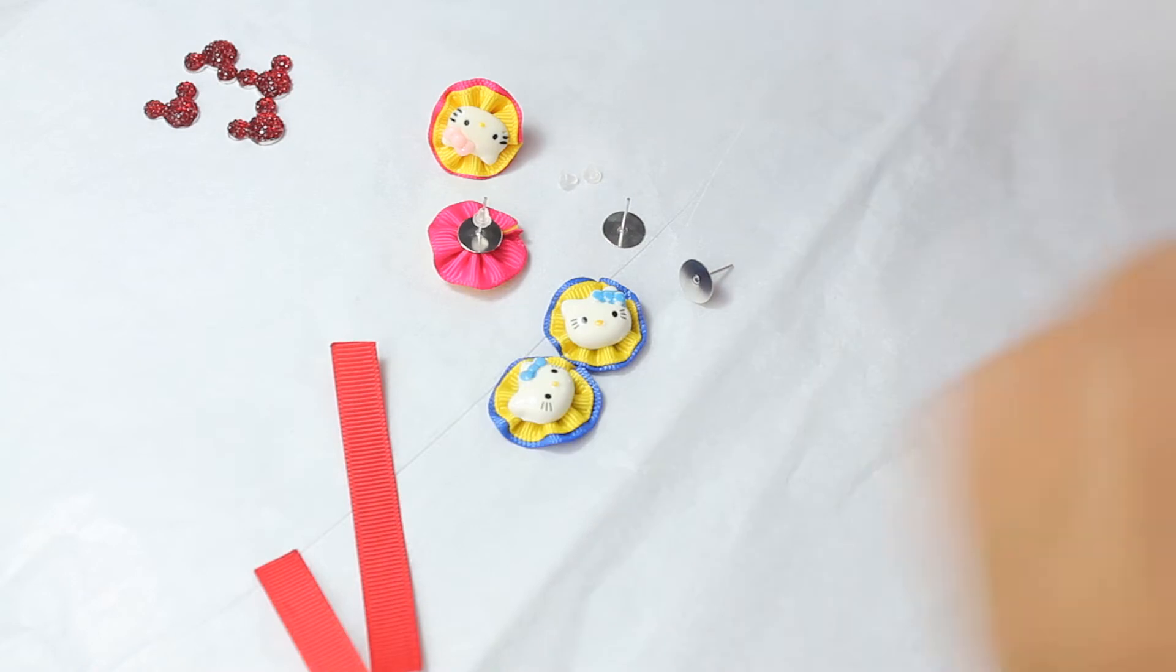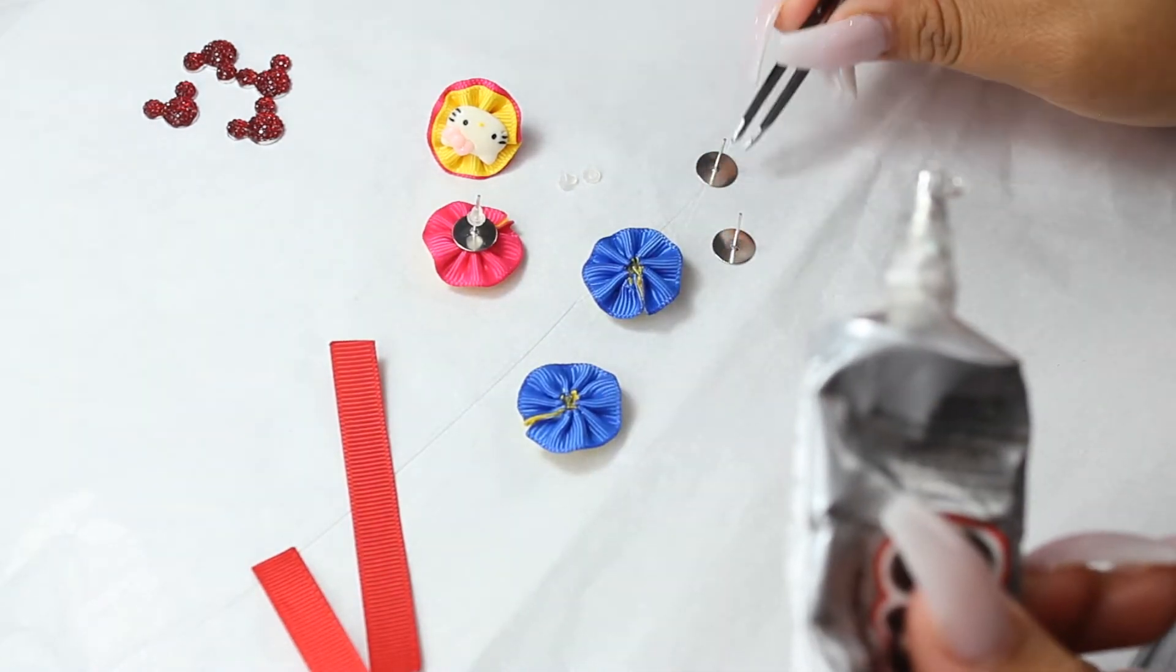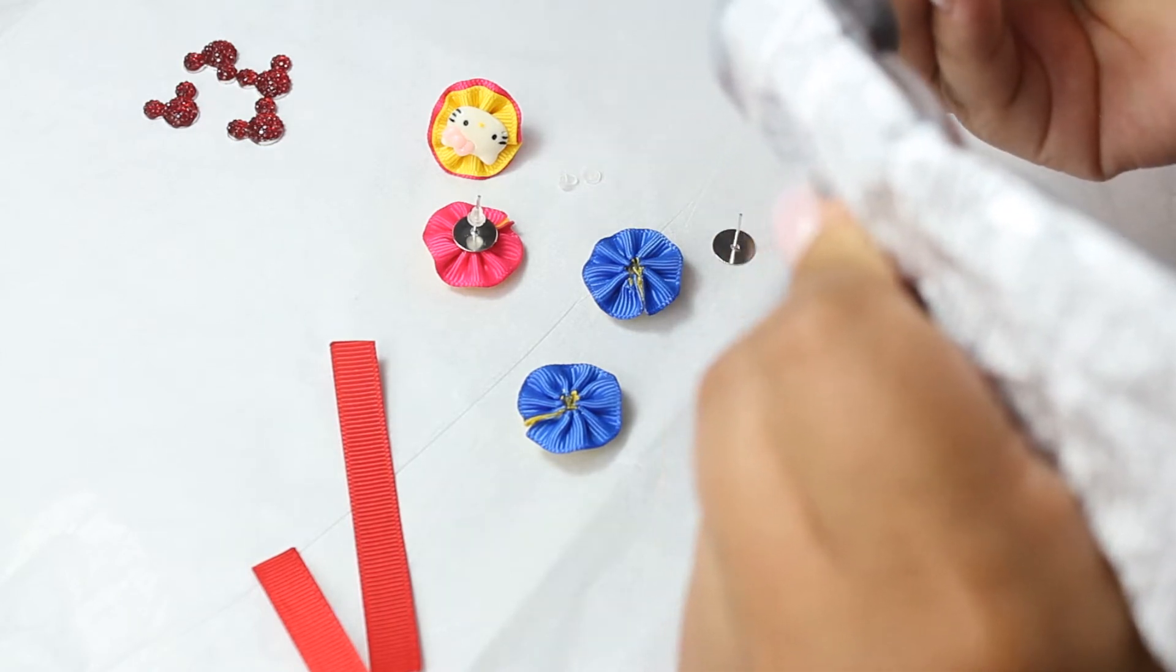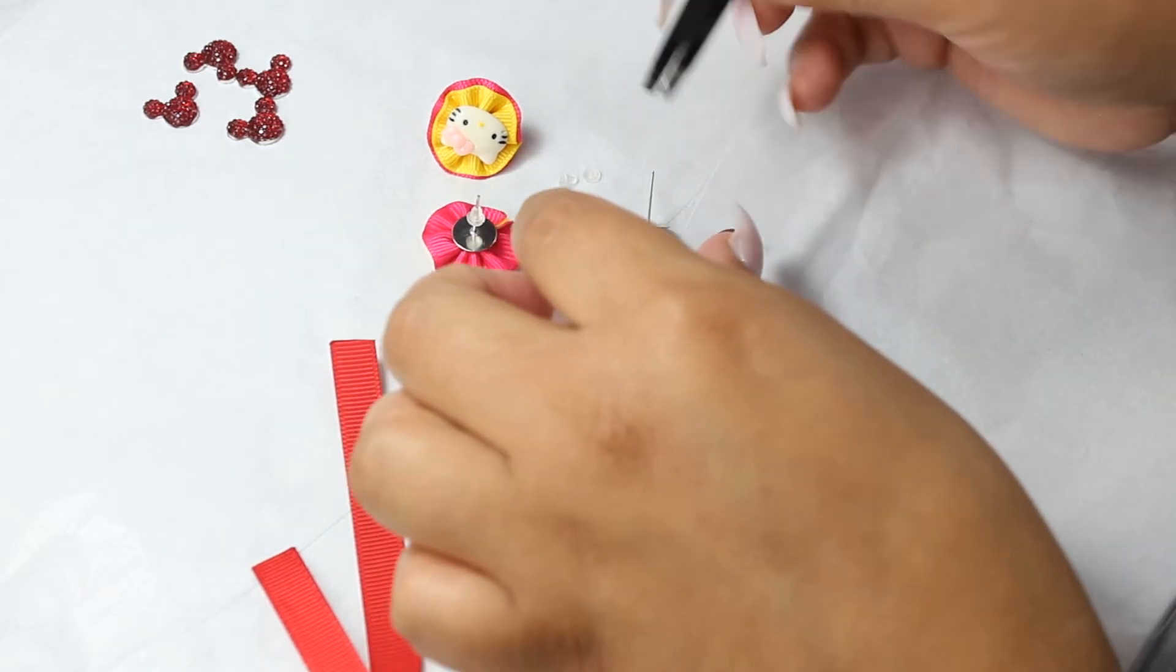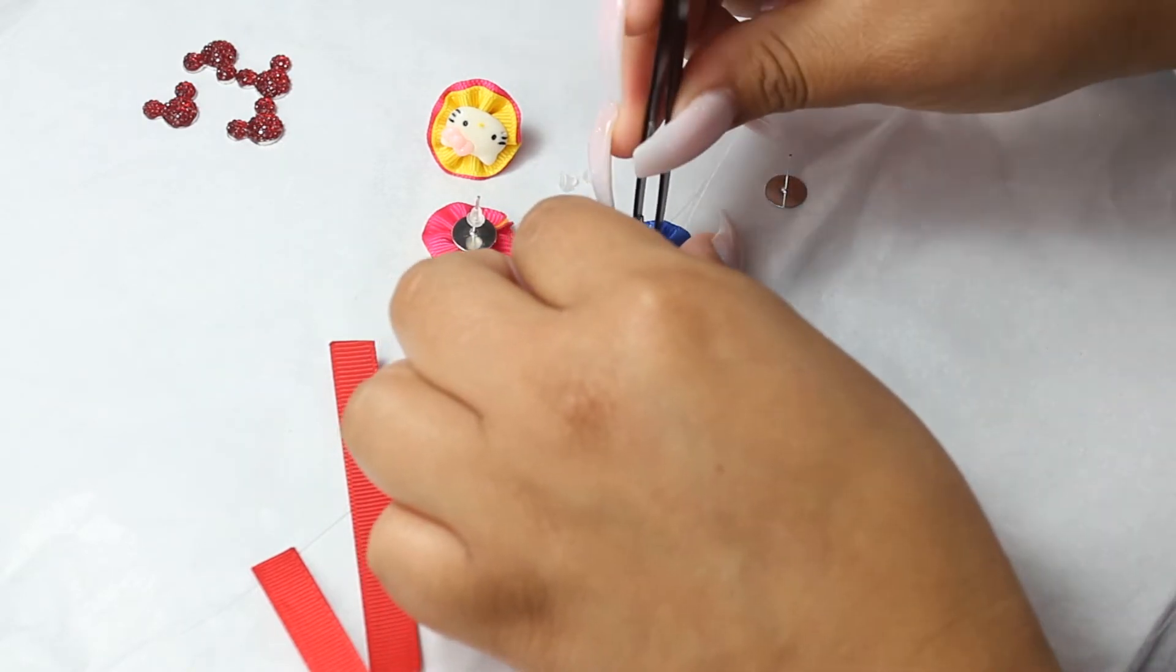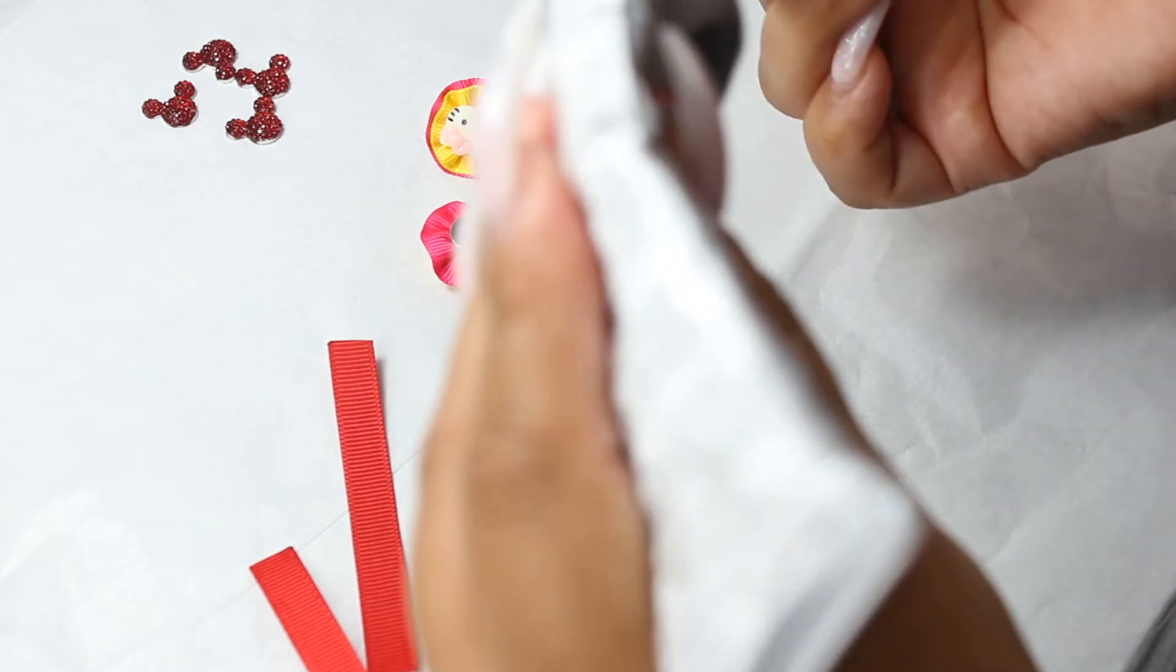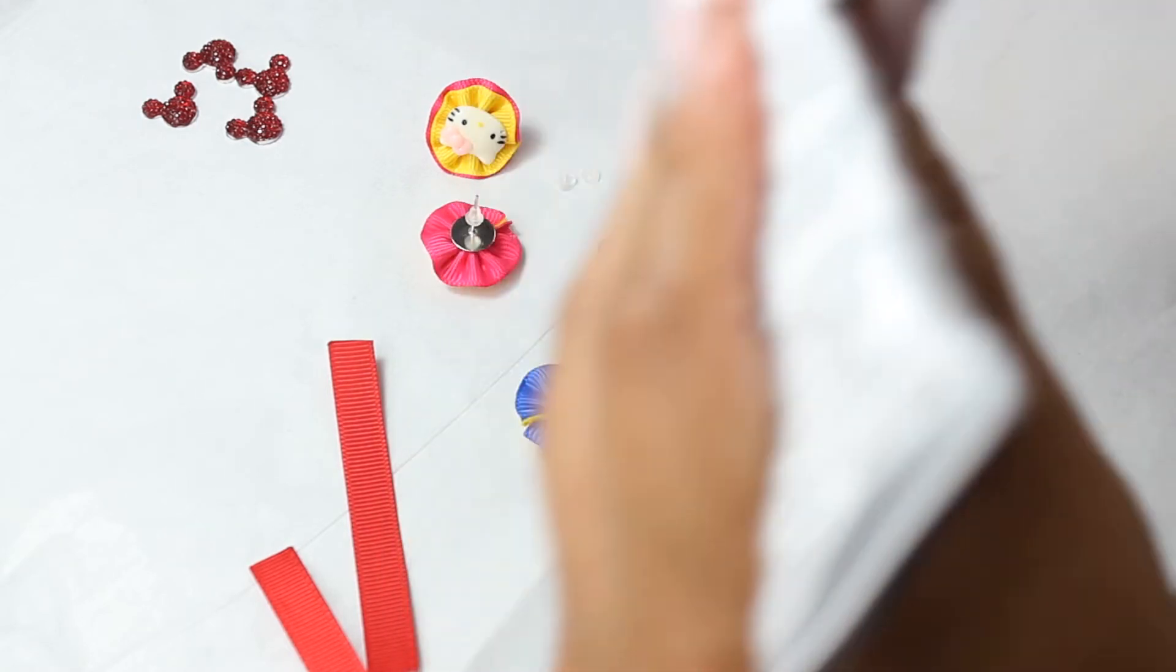Look at that. Grab your little backs, grab your E600, add a little bit of glue and kind of press down. Grab your E600 again and put a little bit on the back.